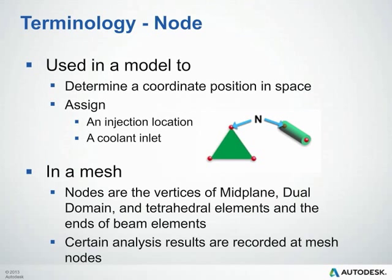Those elements we previously discussed all have nodes. These nodes determine a coordinate, position, and space. They are also places for us to put boundary conditions, such as injection locations, coolant inlets, and vent locations. In a mesh, nodes are at the ends of beams and at each point of a triangle or tetrahedral element. Certain analysis results are recorded at these nodes, such as velocity, pressure, and temperature calculations, so they're very critical in the analysis.